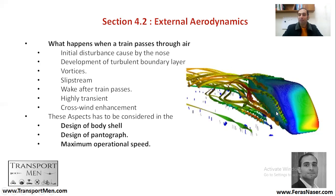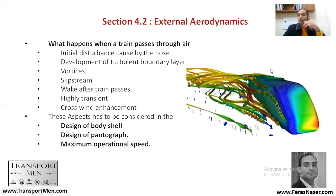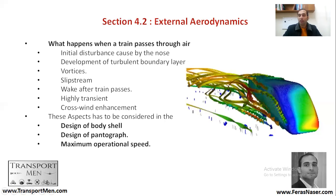Why do we try to understand this phenomenon? Because it affects the design of our body shield — the bodies of the train. It also affects the design of the pantograph and how the pantograph is designed. It also affects the maximum operational speed — at what speed we can safely and reliably operate the train. This is what external aerodynamics is about.